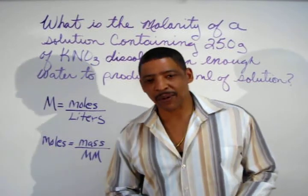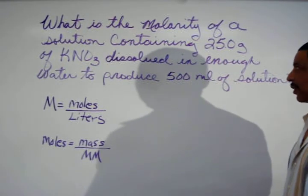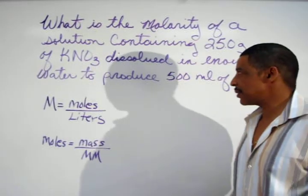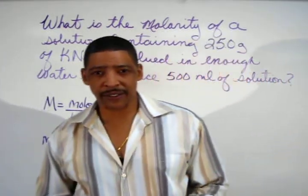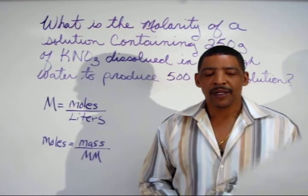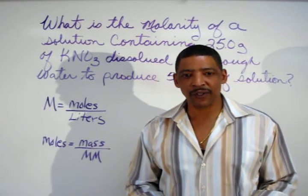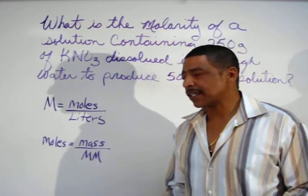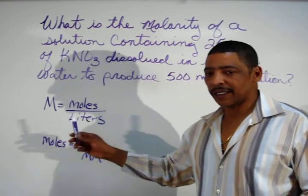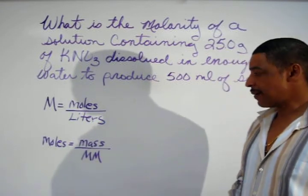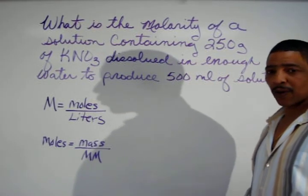Consider the following practice problem. What is the molarity of a solution containing 25.0 grams of potassium nitrate dissolved in enough water to produce 500 milliliters of solution? When solving molarity practice problems, simply write the necessary formulas first. Since the question is asking for molarity of a solution, the molarity formula is clearly needed. However, in the information, moles are not given. Therefore, moles must be calculated.